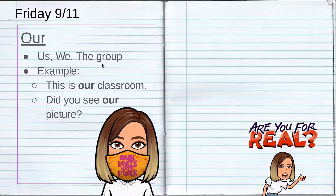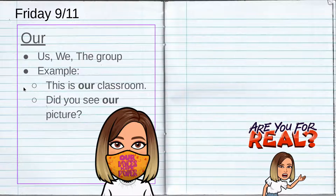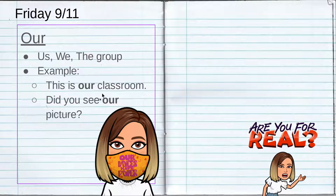We're talking about our collective something. So for our example: 'This is our classroom.' Some people might read it as 'This is our classroom,' and that's why this one's tricky because it sounds just like 'are.' Our other example: 'Did you see our picture?' We're talking about the group — it's not just one person, it's us, including myself.